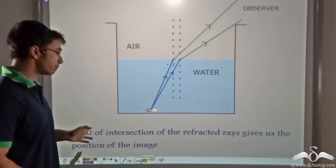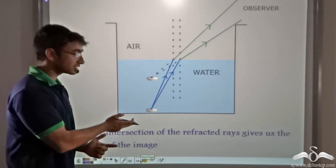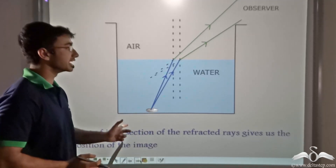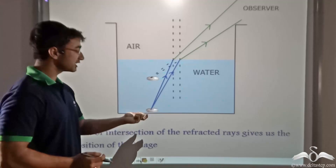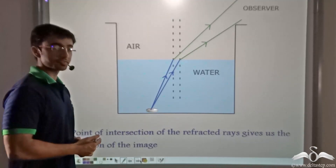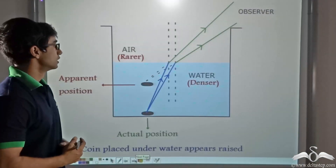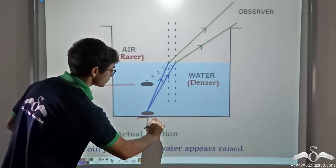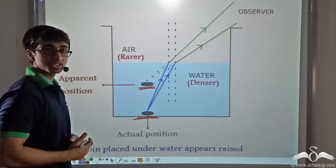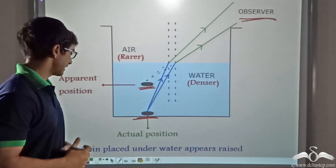Thus we see that the point of intersection of the refracted rays giving us the image is not the same as the position of the actual coin. So this is the reason why, on addition of water, where initially the coin was not visible, the coin is now visible — because of the refraction of light at the water-air interface. The actual position of the coin is here, and this other position is the apparent position, or the position which the observer thinks the coin has been placed at.